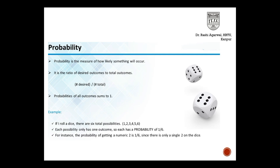Just to reiterate — probability is the measure of how likely something will occur. Suppose I have a dice with six outcomes, one to six, and for each outcome I have a probability of one-sixth. Similarly, for an unbiased coin I have two outcomes, head or tail, and the probability of both is one-half. If I talk about getting even numbers, the number of desired instances upon total possible instances — I can have six outcomes of which two, four, and six are even, so I have three-sixths, that is a half probability of getting an even number.